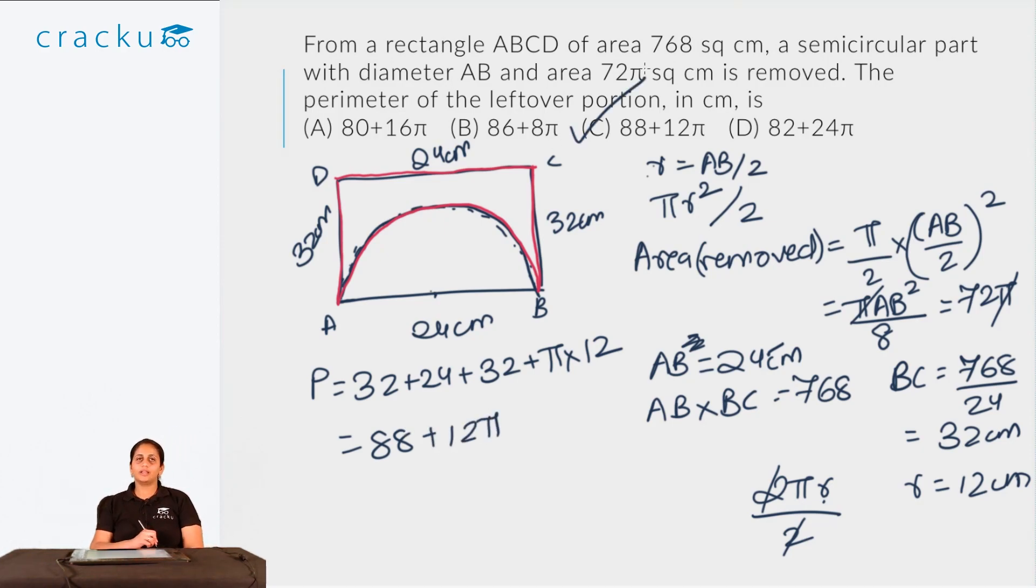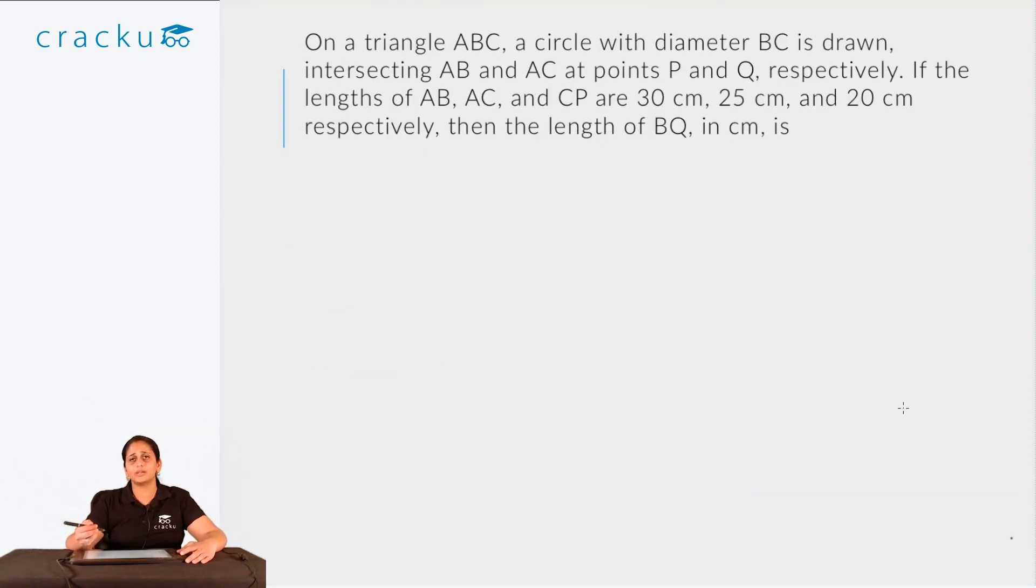So as you could see, this was a simple question that required you to first draw out the particular scenario, know the formula for the area of a semicircle, from that derive what would be one side of the rectangle, use the area of the rectangle formula to find out the other side, and then use the perimeter formula to find out the perimeter of the remaining part. So this is pretty simple. It just required a lot of intermediate steps and calculations. But if you knew the basics, this would be a pretty simple question for you to solve.